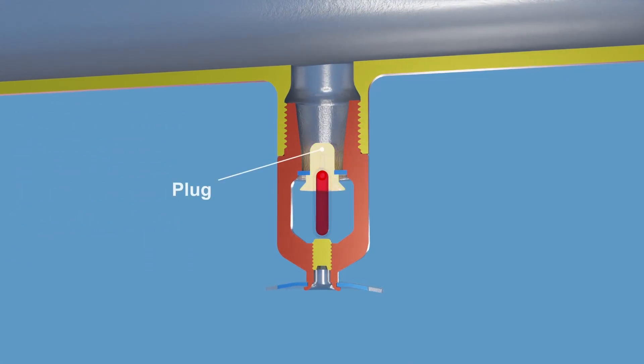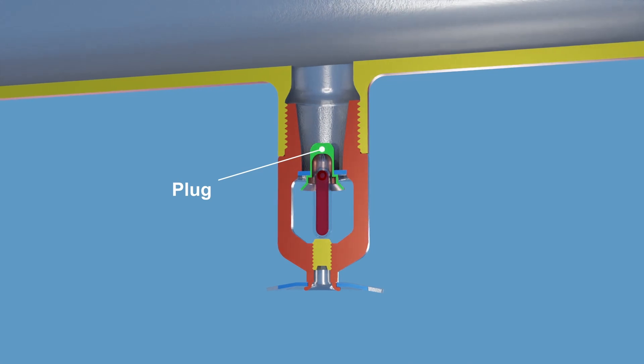This is the plug. It holds back the water inside the pipe and is held in place by the glass bulb.